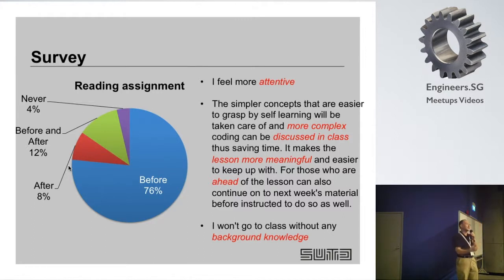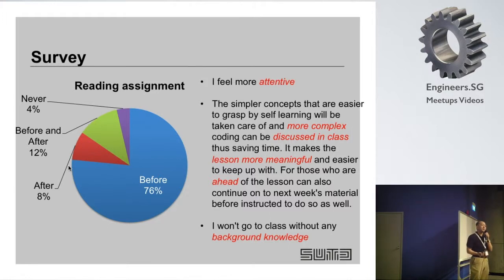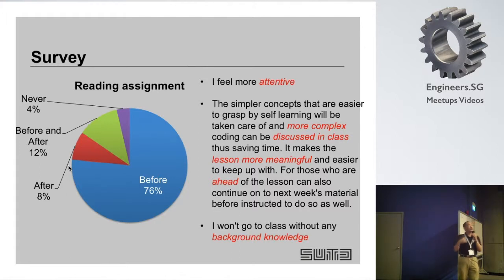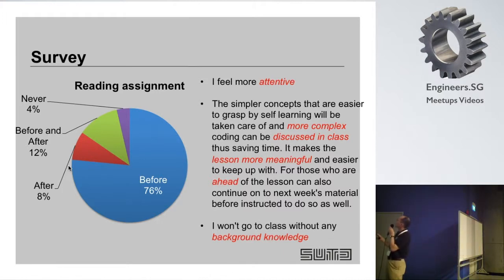This approach has advantages for both students and lecturers. Students are more attentive because they have prior knowledge — and we know from educational theory that prior knowledge improves learning. In class they can discuss more complex topics and have more meaningful discussions. Students who are faster can go ahead at their own pace. This helps handle the wide variety of capabilities — some students have programmed before, others are doing it for the first time. Better students can keep going ahead and help others in class.